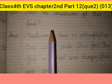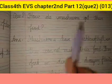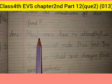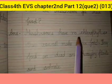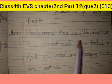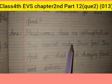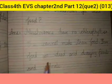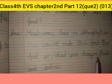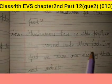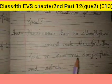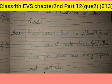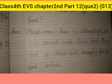हम से पूछा गया था, how do mushroom get their food? हमने लिखा है, mushroom have no chlorophyll — जो mushroom होता है, उसमें chlorophyll नहीं होता है। So, they cannot make their food — जिससे वो अपना खाना कुछ नहीं बना सकते हैं। They feed on dead and decaying plants and animals — वो dead यानी मरे और decaying यानी सड़े-गले पोदों से और animals से अपना खाना प्राप्त करते हैं।